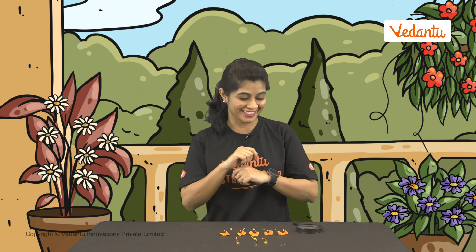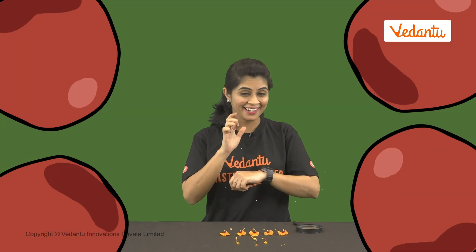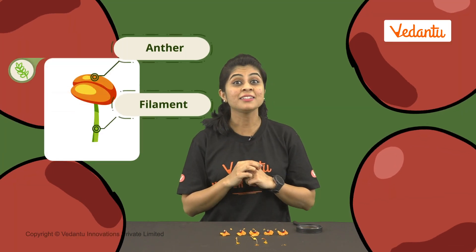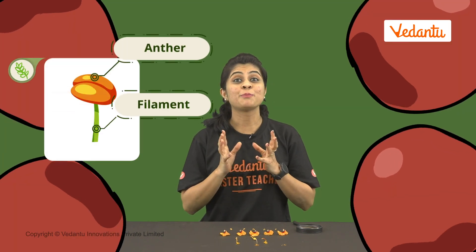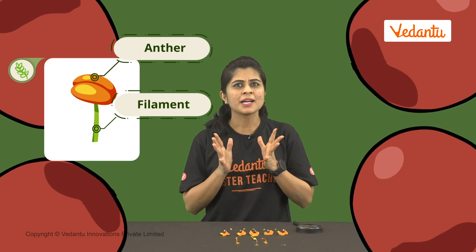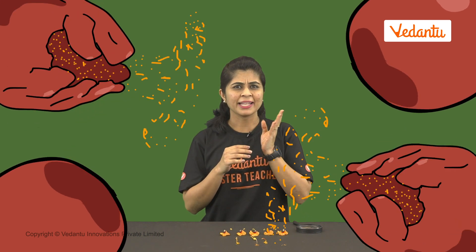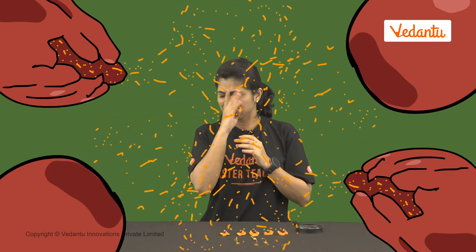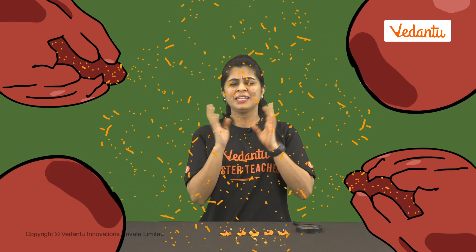Fascinating, isn't it? Let's go have a look at what is inside the anther. The anther is the pollen factory. Once they are made, the anther bursts and pollen appear on the top of the anther.